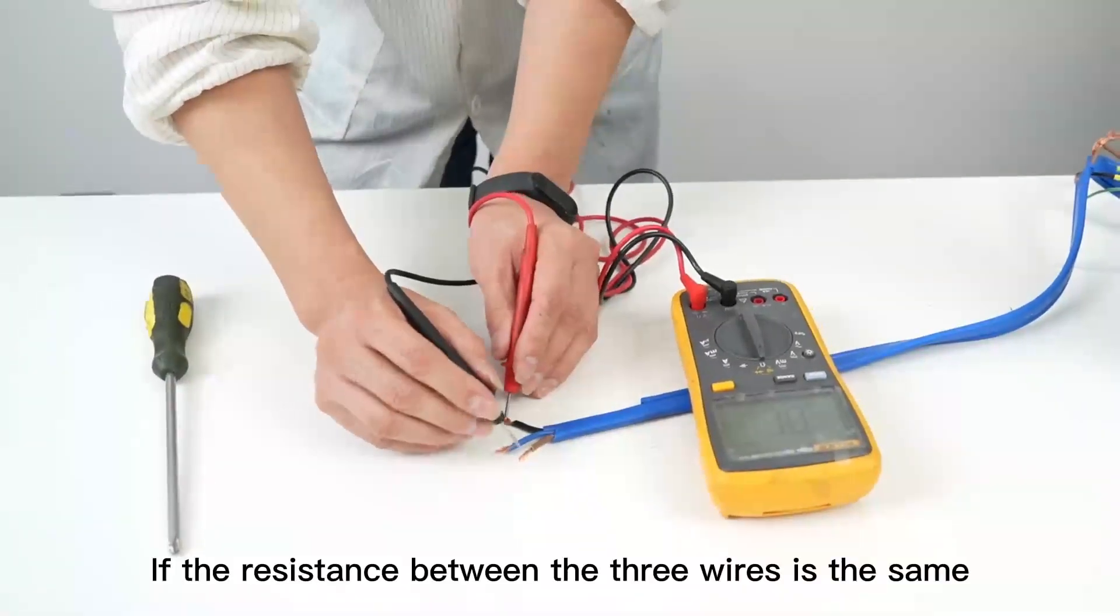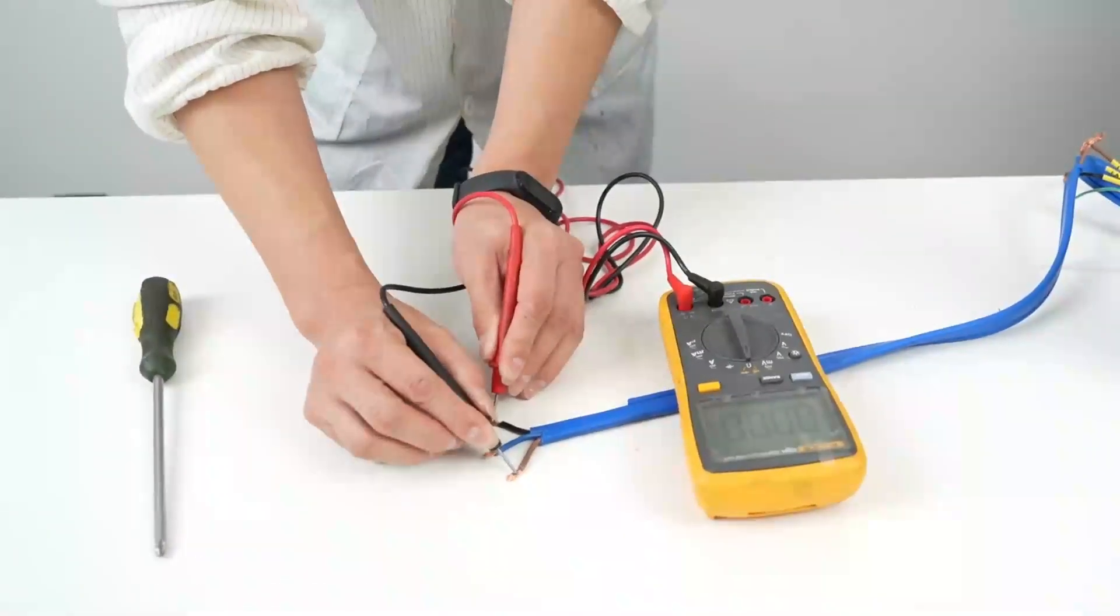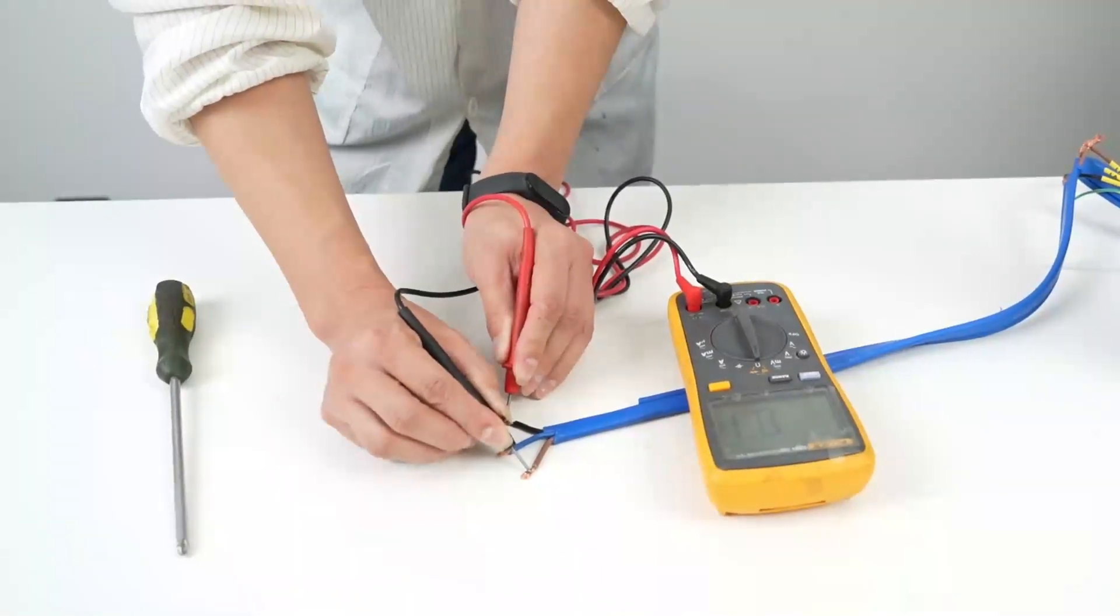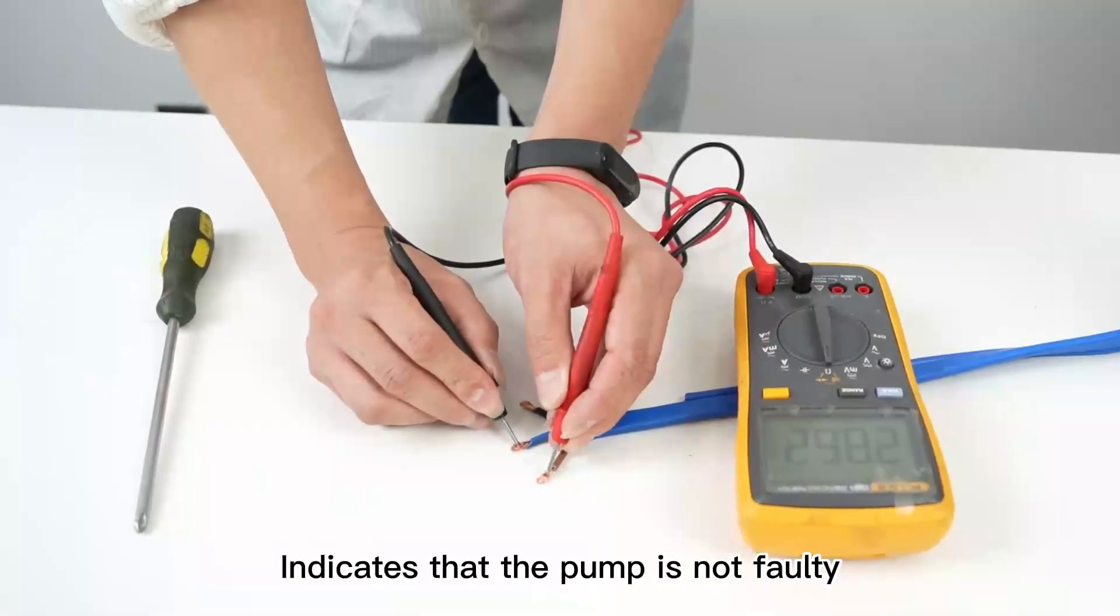If the resistance between the three wires is the same and there is no infinite situation, this indicates that the pump is not faulty.